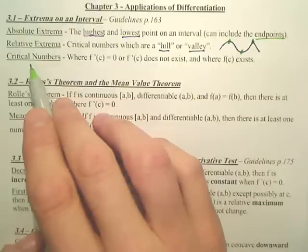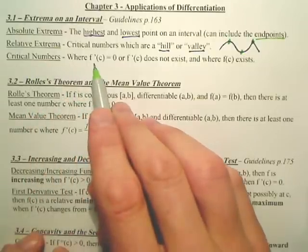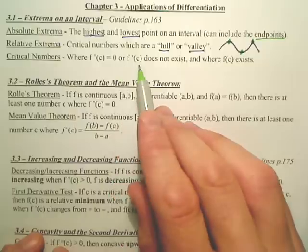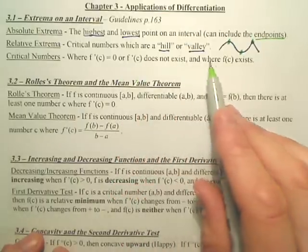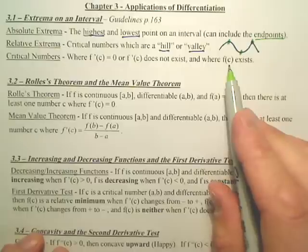So basically, to find a critical number, you take the derivative, set it equal to zero, as well as where it doesn't exist, which is used at the bottom of a derivative. And what you do then is, once you do that, you also have to make sure the point exists.